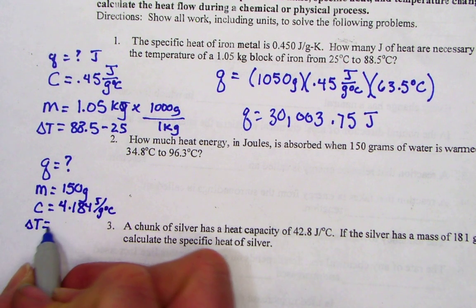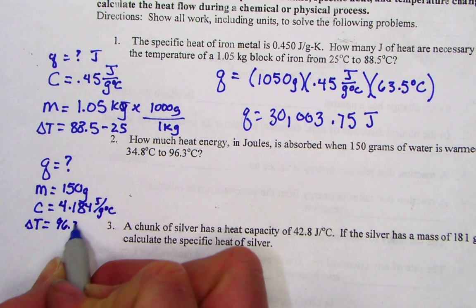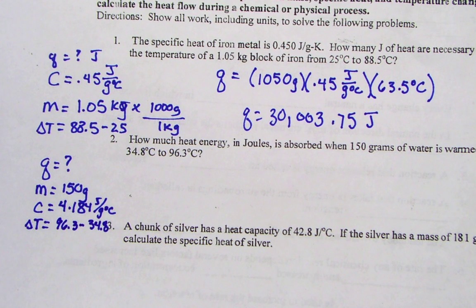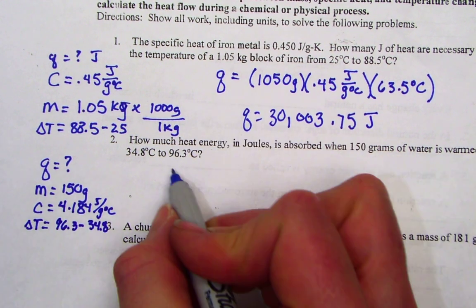And our delta T would be T2, 96.3, minus T1, 34.8. We will plug into our formula, MC delta T.